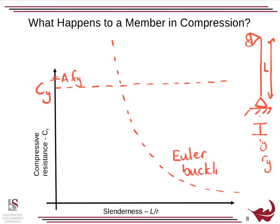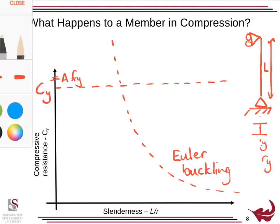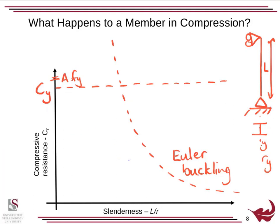Now as the column gets longer, if it were a perfect column, it would experience what's called Euler or Euler buckling and reach an elastic buckling scenario. This provides another limit on the behavior — you will never have more capacity than a perfect column in buckling. These two curves define our resistance: the short column on the one hand, and then a long elastic column on the other. But in reality, columns are not perfect. The material has residual stresses and various other things occur, such that we don't have exactly this limit of resistance.